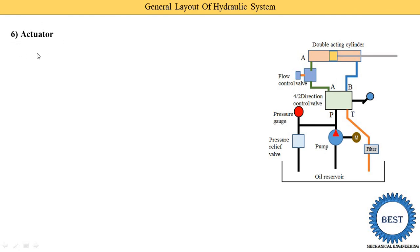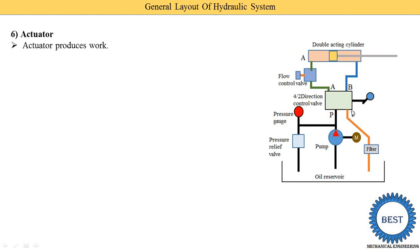The next part is the actuators. Actuators produce work — mechanical work. We supply hydraulic energy to the actuators, and this double acting cylinder is our actuator. In the actuator, hydraulic energy is converted into mechanical energy. In the pump, we supply mechanical energy and it is converted to hydraulic energy. Some people think we could directly supply mechanical energy to the output — you can comment on this video with your answer: why do we supply mechanical energy as input to the pump and also get mechanical energy as output?